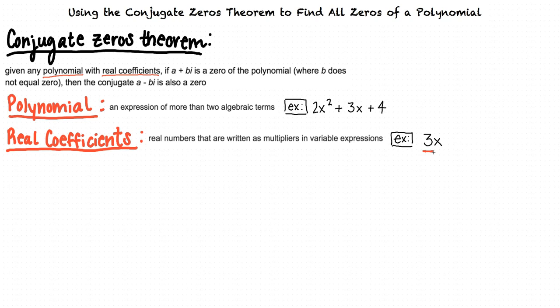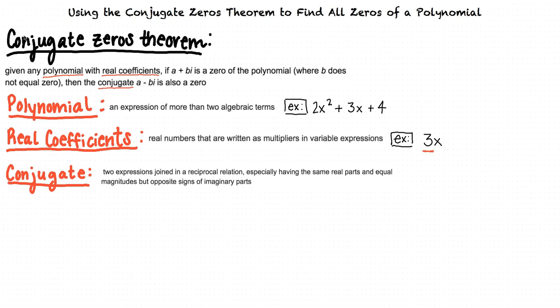Now let's define what conjugate means. Conjugates are two expressions joined in a reciprocal relation, especially having the same real parts and equal magnitudes but opposite signs of imaginary parts. For example, 1 plus i is the conjugate of 1 minus i.